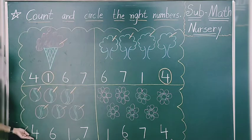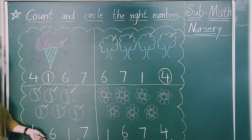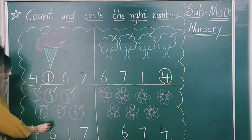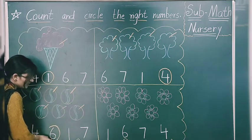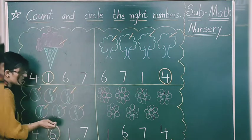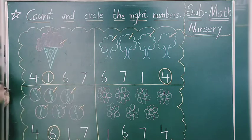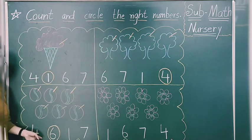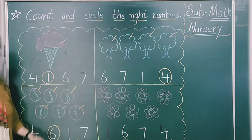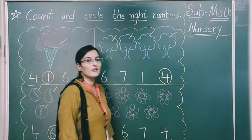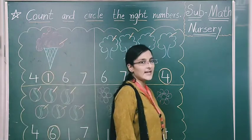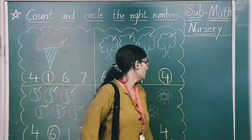Look at here — is this 6? No. Is this 6? Yes. So what we will do? We will do circle on this. Got it? We will do circle on this. It's very easy — yes or no? Yes. And interesting too.